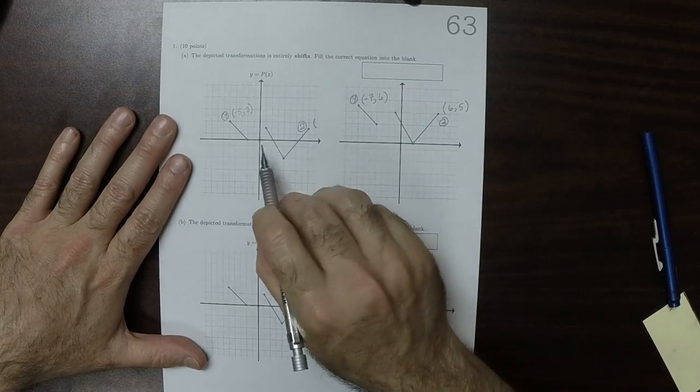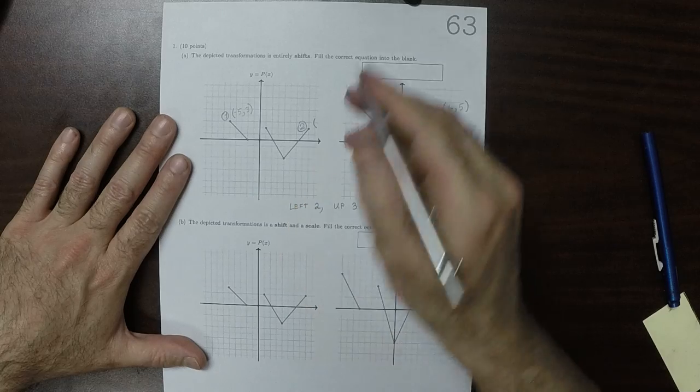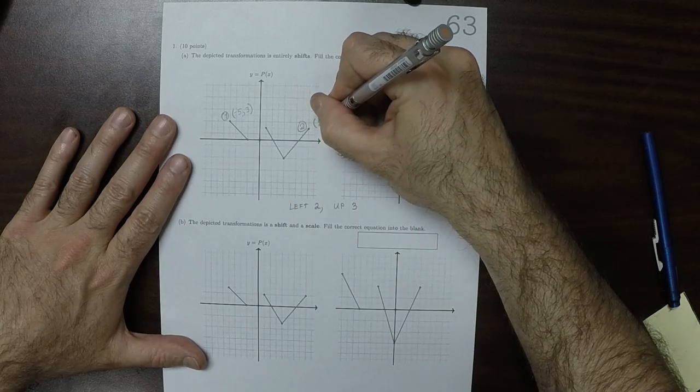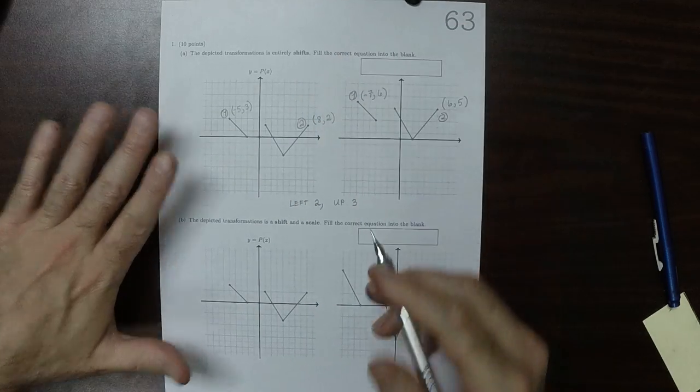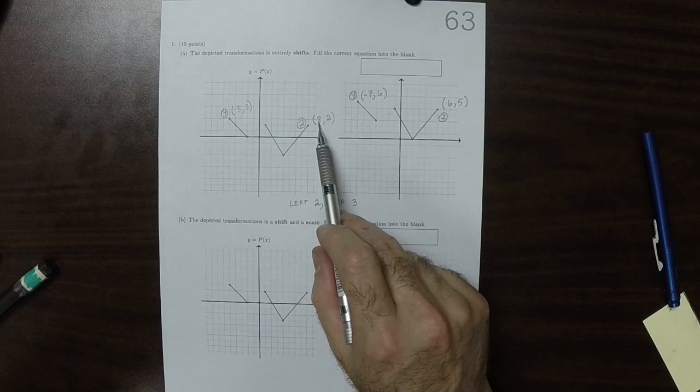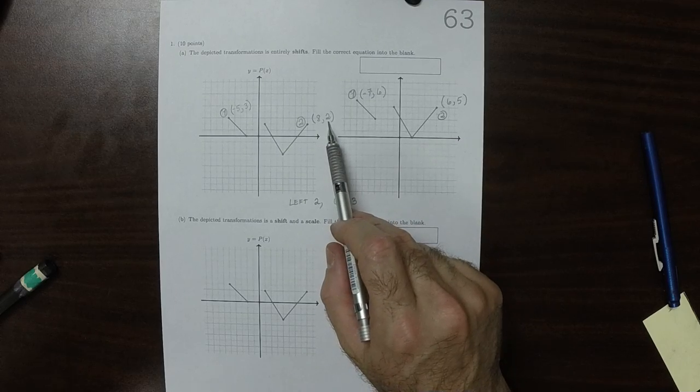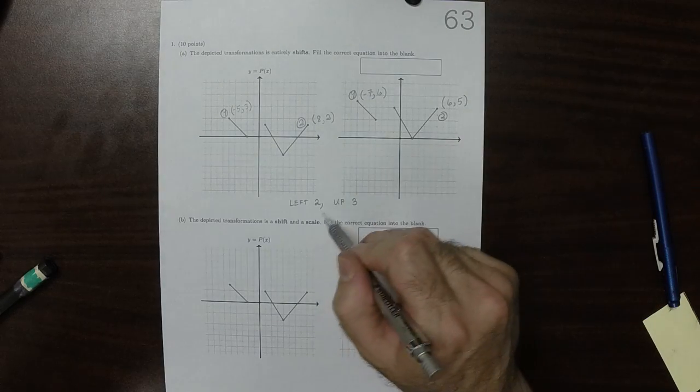And it is at coordinates 6, 5. Well, did it go left 2 and up 3? So 8, left 2 is 6, good. And 2, up 3 is 5, good. So that's the transformation.